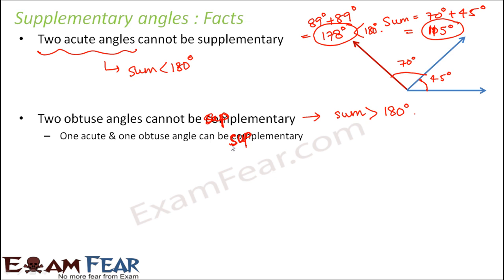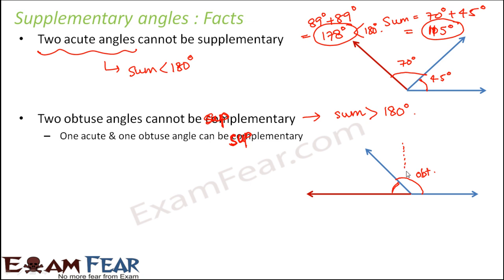Let us look at some examples. When you have a straight line, the two angles formed are supplementary because their sum is 180 degrees. Here one angle is obtuse — greater than 90 degrees — and the other is acute — less than 90 degrees. So one obtuse and one acute angle make a perfect supplementary pair.